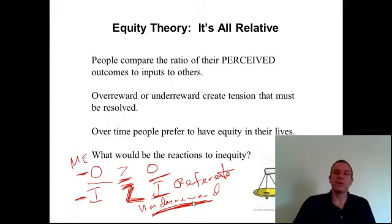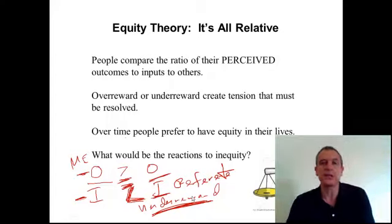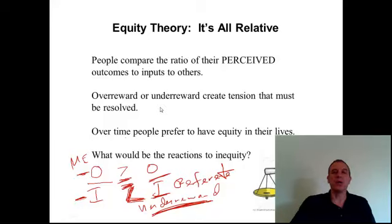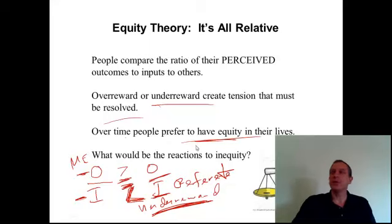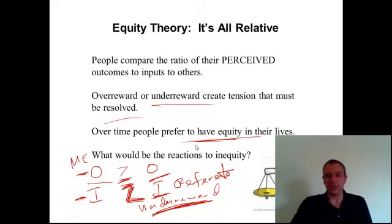Under-reward can be pretty serious. People who feel under-rewarded are going to work less and do a lot of other things. It creates tension. Under-reward particularly creates tension that must be resolved, because people want equity in their lives — they want the world to be fair.